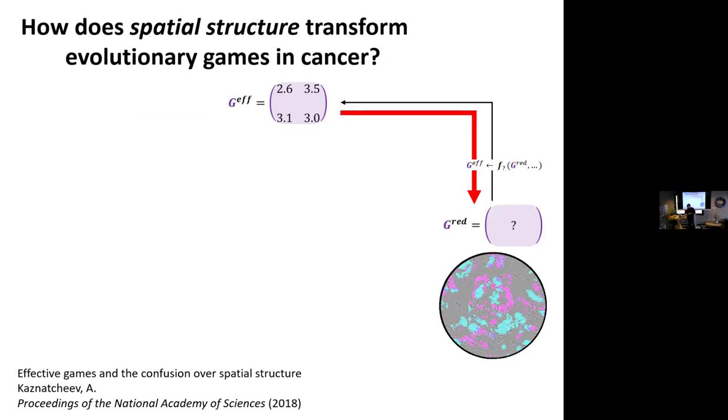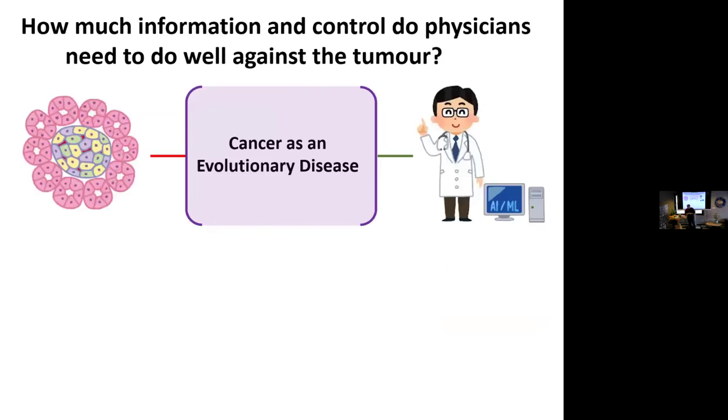Another thing where game theory comes more in that I really care about is: how much information control do physicians need to do well against the tumor? If you're a computer scientist and you quickly saw the equations flashing by for replicator dynamics that the population follows, you'd yell out, that's multiplicative weight updating. That's an optimal algorithm for playing zero-sum games. So what does that tell you? That tells you that cancer is really good at this game. People like to describe evolution as dumb, just searching around blindly, etc. In this case, where all the types are already present in the population, they're just competing for representation, the algorithm that evolution follows is, in some strict sense, optimal.